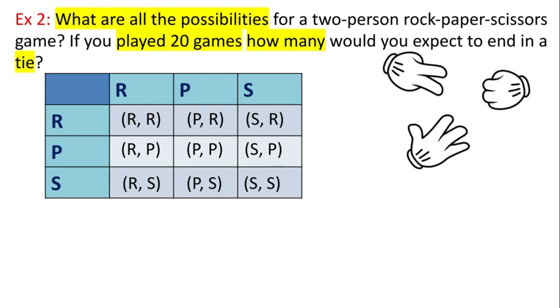Now, if I play 20 games, how many of them end up in a tie is the other question. I'm going to go through and I'm going to circle all of the ties. There's a tie game when we both pick the same thing. So I have these three out of nine.